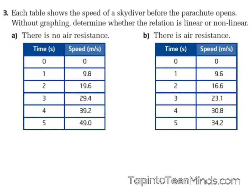If you didn't get a chance to look at these questions over the weekend — I know it was a nice weekend, sun was out — let's take a look at this one now. We've got two tables. It shows the speed of a skydiver before the parachute opens. We've got two different scenarios: the first one is with no air resistance, and the second table is with air resistance.